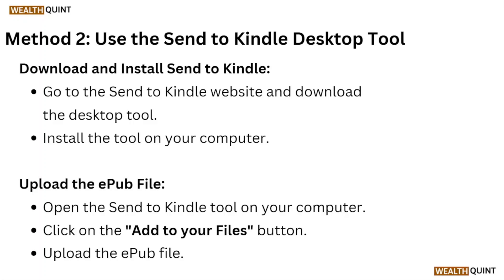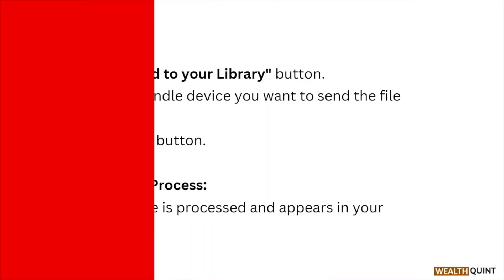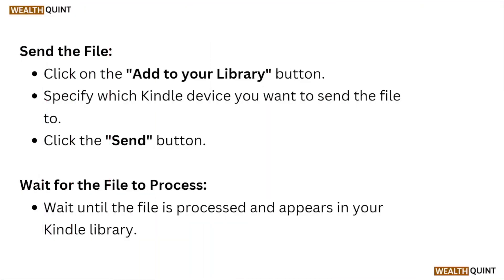Click the Add to Your Files button and upload the EPUB file. Then click the Add to Your Library button and specify which Kindle device you want to send the file to. Click the Send button and wait until the file is processed and appears in your Kindle library.